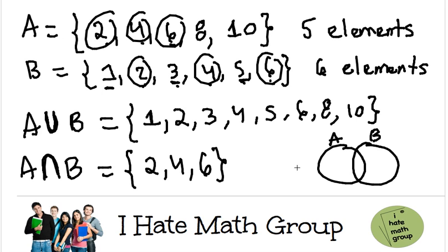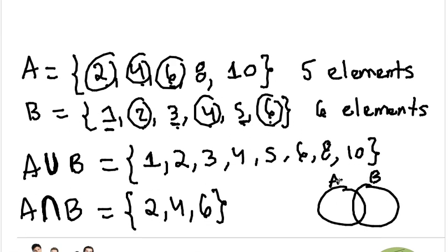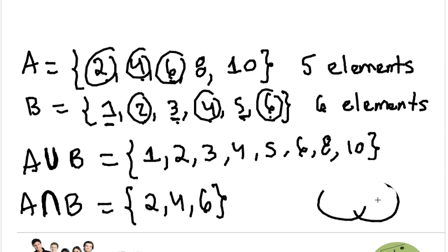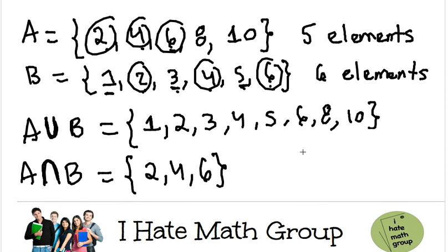If I wanted to do the Venn diagram with these two, okay, the first step is to figure out what is inside the intersection. Let's go ahead and do this a little bit bigger. So it's actually, you know, easier to see, but this is very easy to do.